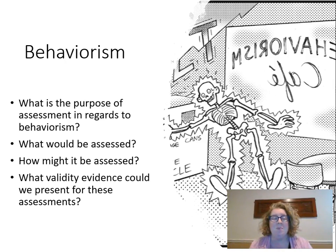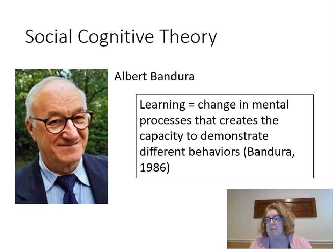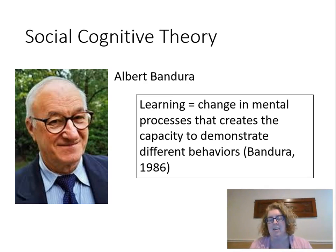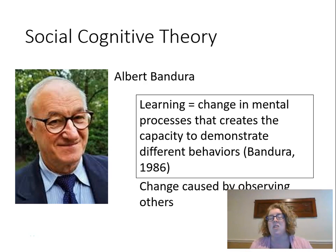Moving on to social cognitive theory — hopefully you thought about Albert Bandura. In social cognitive theory, learning is a change in mental processes that creates a capacity to demonstrate different behaviors. We're adding that additional component: not just thinking about change in behavior, but also that change in mental processes. That change can also be caused by observing others — we're not just learning from things that happen to us, but from what we see in our environment, hence the social cognitive piece.